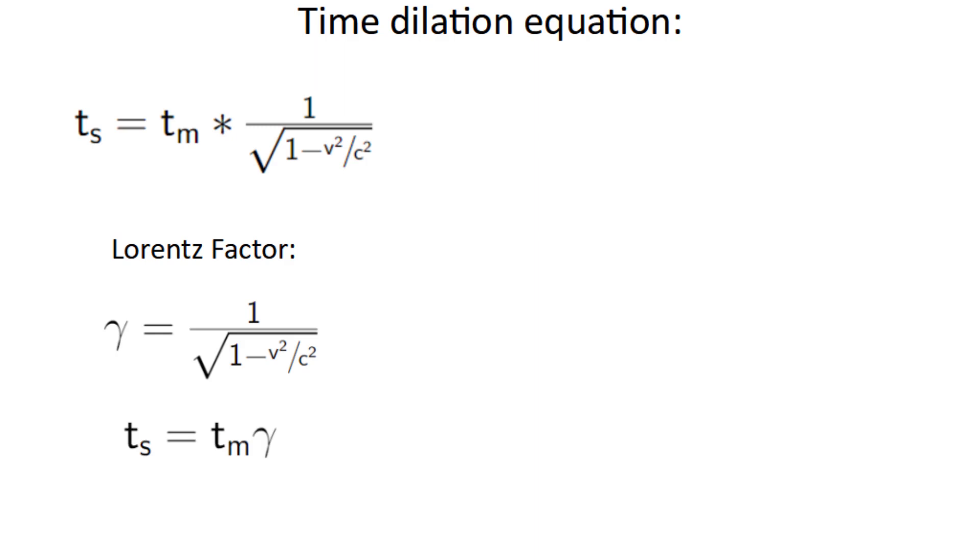Of course, there's also the version that gives tm in terms of ts, where you multiply by just the square root term instead of its reciprocal. Personally, I find this one to be a lot more intuitive, so that's what I'll use.